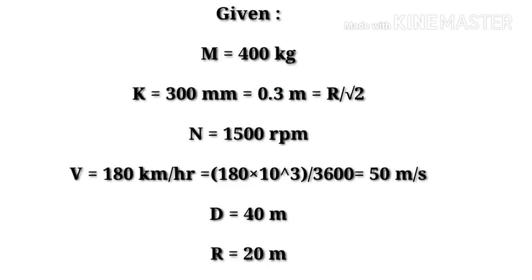The aeroplane makes a loop in a circle of 40 m diameter in the vertical plane, tending to rise the nose. They give the diameter of that loop as 40 m, so the radius R = 20 m.